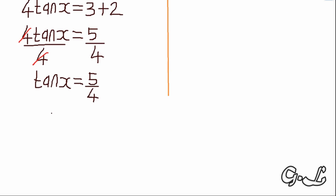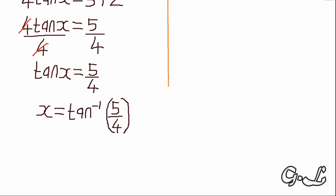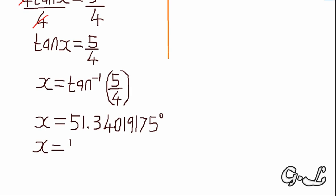The next step is to make x the subject by taking the inverse tan on both sides. So x equals tan inverse of 5 over 4. Tan inverse of 5 over 4 gives 51.34019175 degrees. Rounding to one decimal place as instructed, x equals 51.3 degrees.